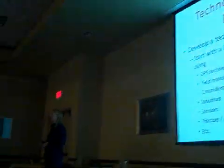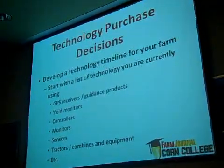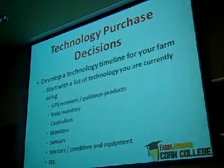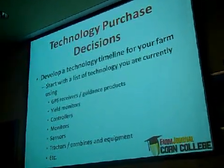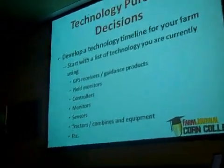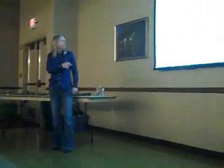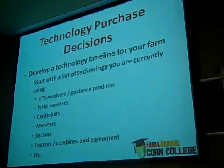What we really need to do from a technology perspective is sit down and develop a technology timeline for your farm. Start with a list of what you have today. This sounds elementary, but Ken and I both run into this regularly — guys who never paid attention to tools they had and bought other monitors or things when they could have done the same thing with what they currently had, maybe spending a lot of money or ending up running a lot of monitors unnecessarily. Make a list of what you're using: GPS receivers, yield monitors, controllers, population monitors, different sensors, tractor, combine, etc.